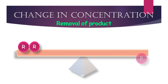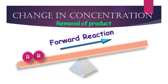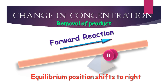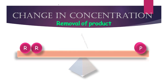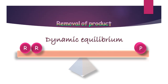Likewise, the removal of product from the reaction mixture disturbs the equilibrium position. To minimize the effect of this change, the reaction goes in the forward direction and the equilibrium position shifts to the right, resulting in the formation of more product. In this way, dynamic equilibrium is restored.